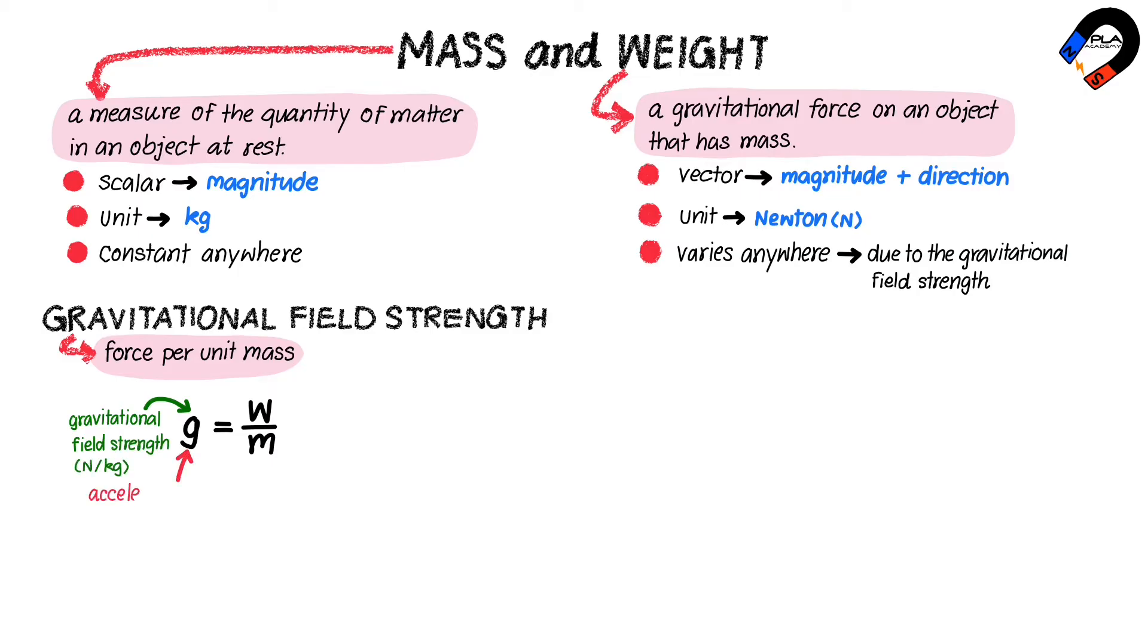And g is equivalent to the acceleration of free fall, which is 9.8 meters per second squared on Earth. Therefore, the gravitational field strength on Earth is also 9.8 newtons per kilogram.